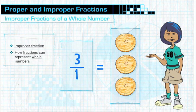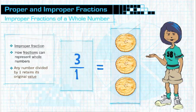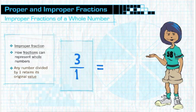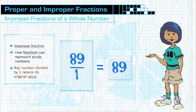Third, it reinforces the importance of that interesting number one again. Any number divided by one is equal to its original value. So, three divided by one equals three. Seventeen divided by one equals seventeen. Eighty-nine divided by one equals eighty-nine. And so on.